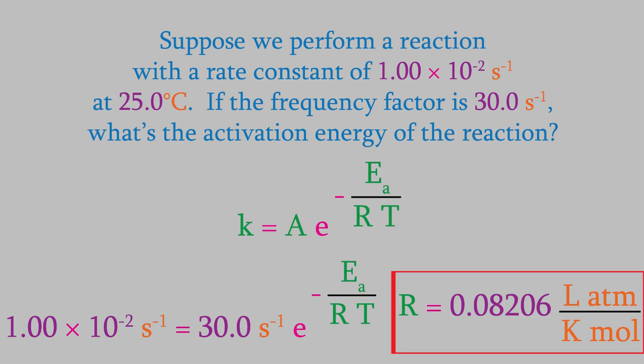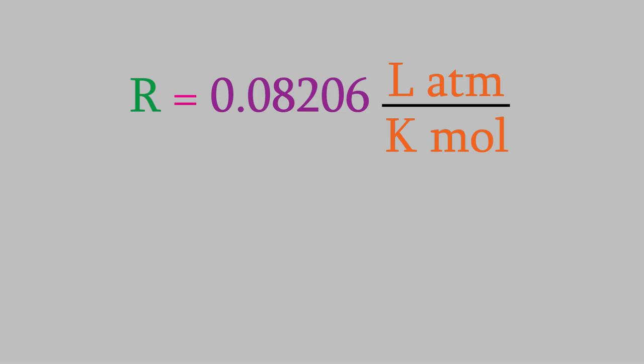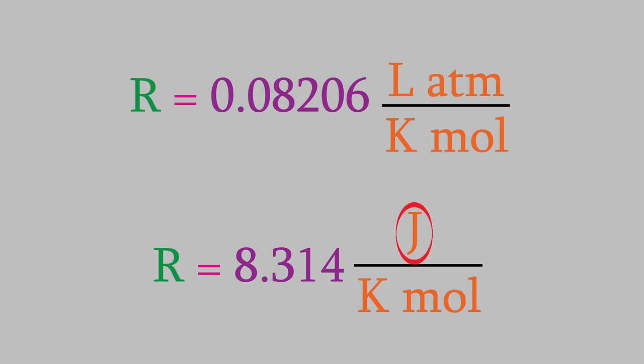The problem is that those units for R won't cancel out properly with our other data. For example, this value for R has atmospheres in the unit, and that won't cancel out for us. Neither will liters. If we leave R in these units, we'll get an answer with some very strange units at the end. But fortunately, we can use different units for R. It turns out that R is also equal to 8.314 joules over kelvins times moles. You might remember that a joule is the unit we use for energy. As you'll see in a minute, using this value for R will eventually give us joules as the unit for the activation energy, which makes sense. So, we'll use this number for R.